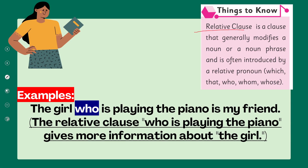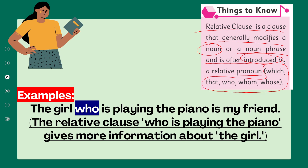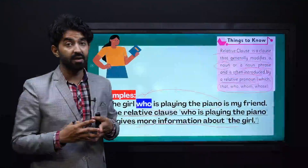Moving on to relative clauses: a relative clause is a clause that generally modifies a noun or a noun phrase and is often introduced by a relative pronoun. Let's look at an example: 'The girl who is playing the piano is my friend.' The relative clause 'who is playing the piano' gives more information about the girl. This part is a dependent clause with a subject and a predicate — such clauses we call relative clauses.